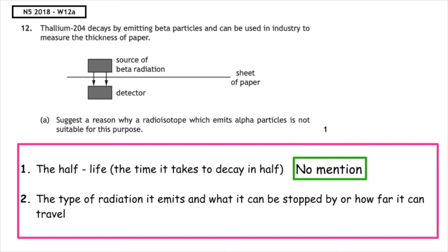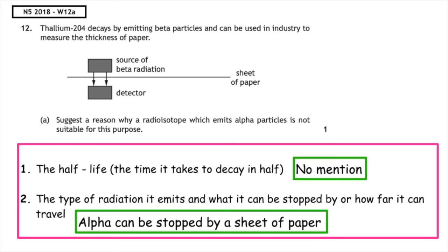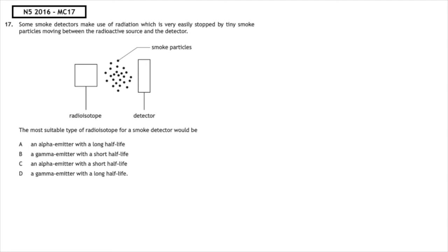However, it does mention a sheet of paper, and we know that alpha particles can be stopped by a sheet of paper, so it would not be able to pass through to the detector.